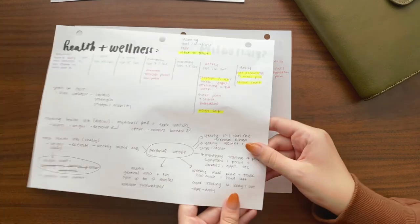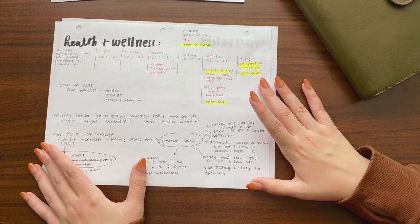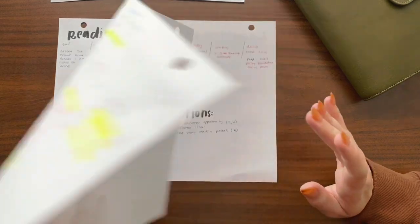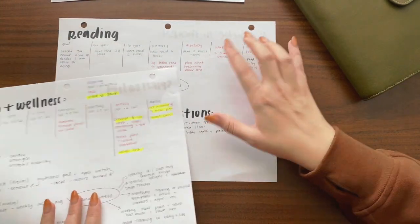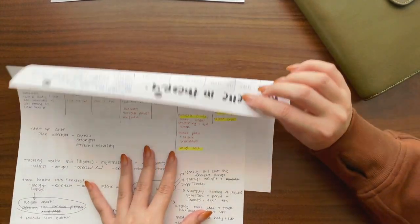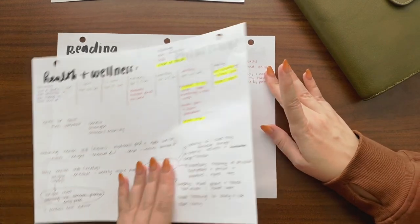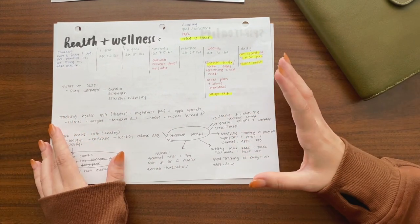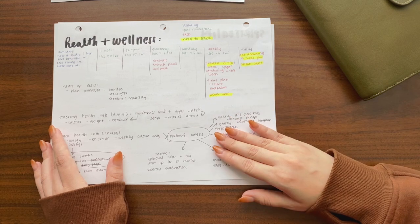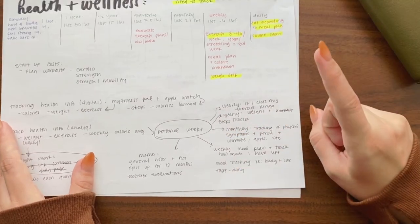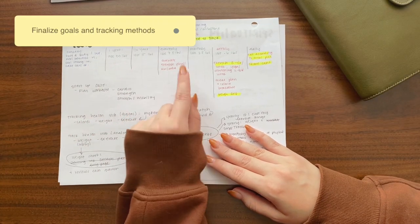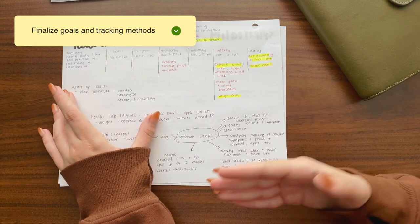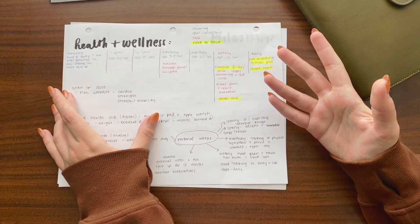So then what I did was I took the goals that were emerging as my priority goals, which were health and wellness, spirituality, reading, and then my content. I took the things that were emerging as priorities for 2023 and I broke them down again. Yes, again. I stuck with the someday, one year, half year, quarterly, monthly, weekly, and daily map from Sterling Inc. Because that is the planner I'm going to be using in 2023.